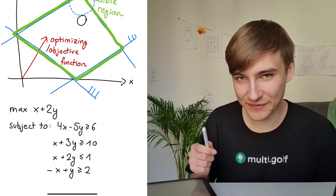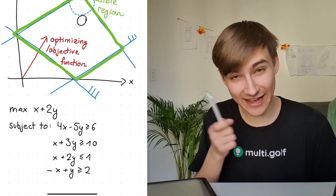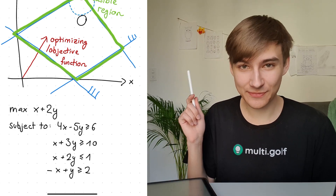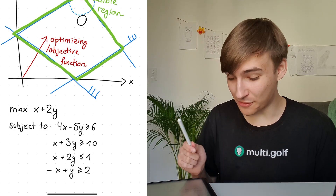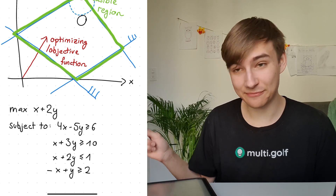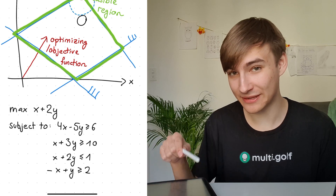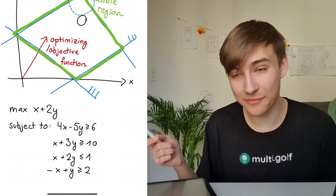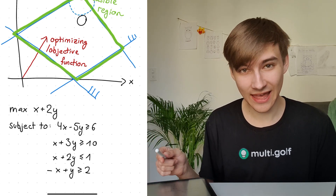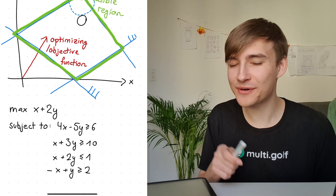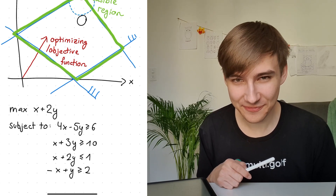For the complexity nerds out there: linear programming turns out to be solvable in polynomial time, meaning linear programming is in P - so all problems expressible as linear programs are also polynomial-time solvable and thus in P. And if you know what that means, you should probably go outside more often. It turns out you can actually express the TSP as a linear program, and that's exactly what these three researchers did - but you need to cheat a little bit.